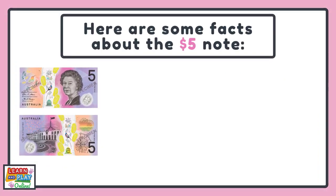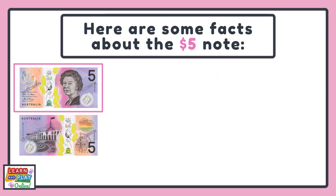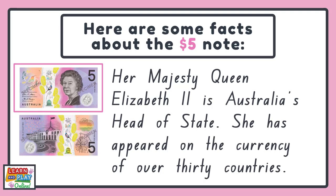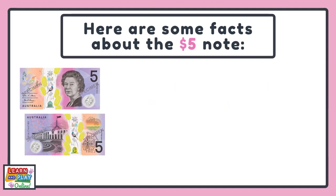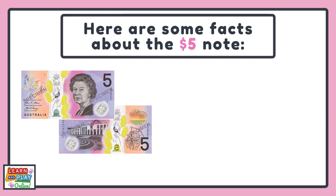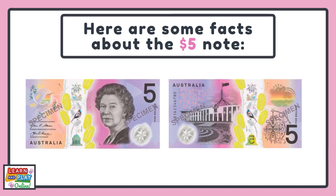Here are some facts about the $5 note. On one side, there is a portrait of Queen Elizabeth II. Her Majesty Queen Elizabeth II is Australia's Head of State. She has appeared on the currency of over 30 countries. The Parliament House and the Four Court Mosaic is featured on the other side of the note. Did you know that each denomination in the new series of Australian banknotes will feature a different species of Australian wattle and a native bird?